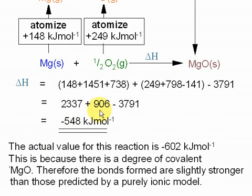So, there's the magnesium side. This is the oxygen side. This is the lattice energy side. Gives you overall a negative enthalpy change as you'd expect. Worth noting that the actual value for this reaction is slightly more exothermic, minus 602 kilojoules per mole.